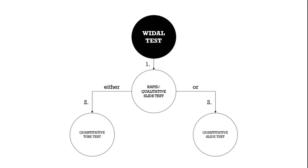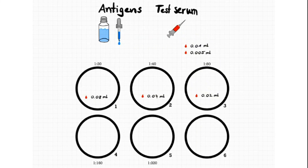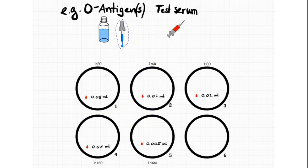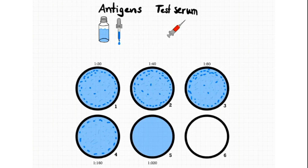Instead of a quantitative tube test, you can also do a quantitative slide test — it's almost the same, just on a slide. We start with undiluted serum in different volumes from 0.08 ml to 0.005 ml, which gives us different concentrations, and add them to the corresponding circles 1 to 5. After that we add a drop of the appropriate antigen suspension — for example the O antigen — to each circle which showed agglutination in the rapid slide test. We mix the contents and rock the slide slowly for one minute. The titer of the antibody is the highest dilution of serum up to which there is clear agglutination — so again 1:160. Since the rapid slide test was also positive for the H antigen, we clean the test slide and repeat the process for the H antigen titer determination.